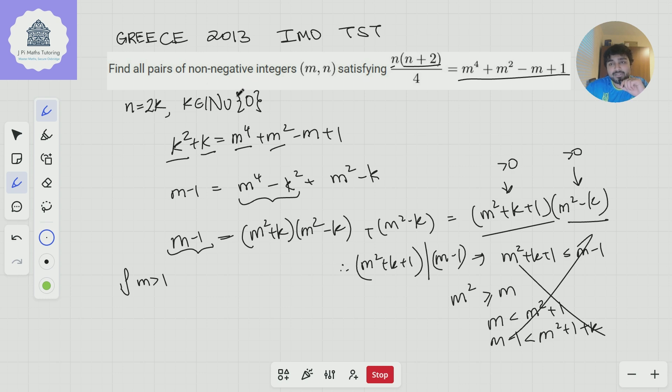But m is supposed to be a non-negative integer. So the only hope here of there being a solution is if either m is 0 or if m is 1. Now, we just test those two cases. So if m is 0, what do we get? We get n(n+2)/4 = 1, so we get n(n+2) = 4. And does this have solutions? You could expand this and get n^2 + 2n - 4 = 0. But this thing doesn't have any integer solutions for n. So we hit a bit of a dead end.